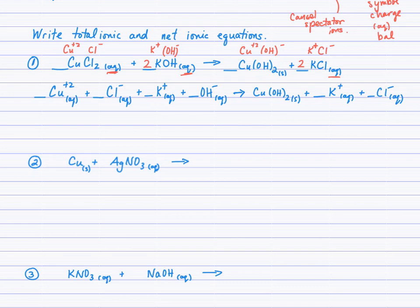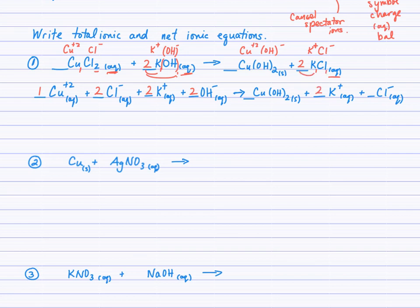Now for balancing. Looking back at the original equation: there's 1 copper, so 1 copper ion; 2 chloride ions. There's 1 potassium, but multiplied by the 2 out front gives 2 potassium ions. Same with hydroxide — 1 times 2 gives 2 hydroxide ions. The solid keeps its coefficient, which is just 1. On the products side: 1 potassium times 2 gives 2 K⁺, and 1 chloride times 2 gives 2 chloride. That completes the total ionic equation.